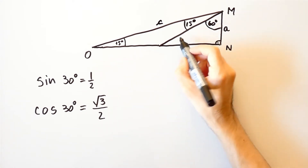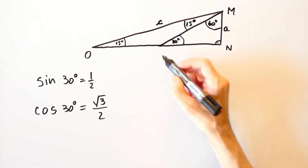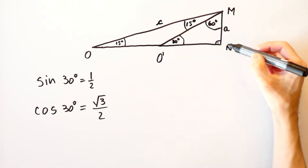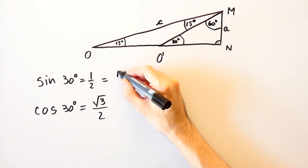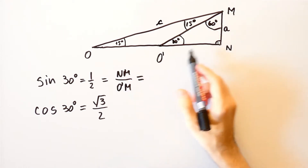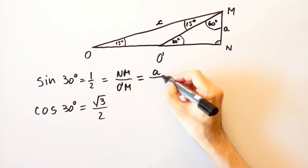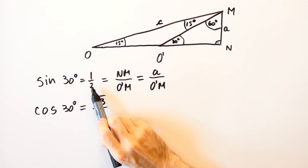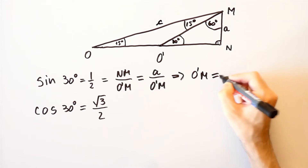That means that this angle here is equal to 30 degrees. If we denote this point by O prime, then the sine of 30 degrees is equal to Nm over O prime m. So the sine of 30 degrees equals A over O prime m. Since the sine of 30 degrees is equal to 1 over 2, that means O prime m is equal to 2 times A.